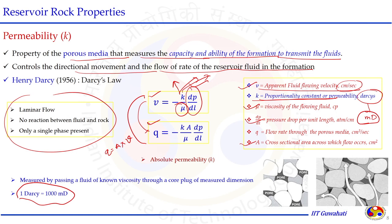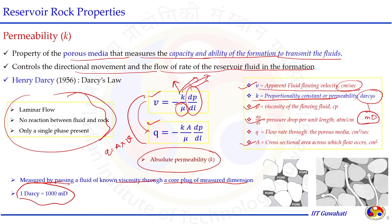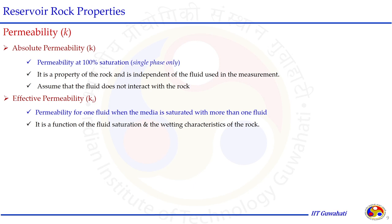Following Henry Darcy's principle, the assumptions require only a single fluid passing through the porous media — in that case, the permeability calculated is the absolute permeability. When multi-phase is present, relative permeability applies. The value of permeability is measured by passing a fluid of known viscosity through a core plug of known dimensions, measuring the pressure across that length, and calculating the proportionality constant k. Similar to porosity, permeability is classified into absolute permeability and effective permeability.